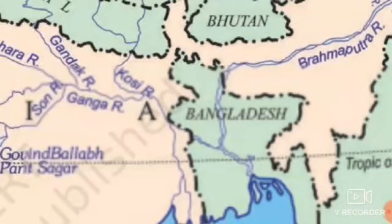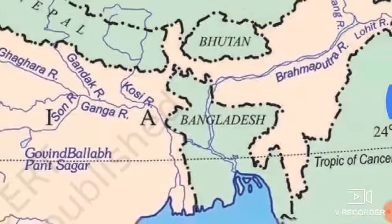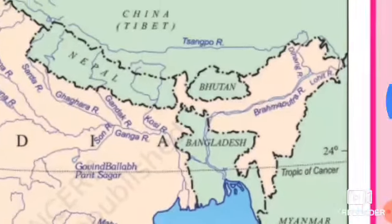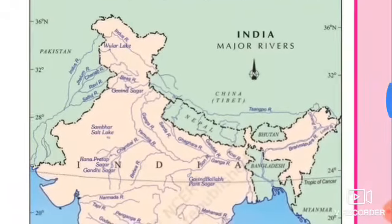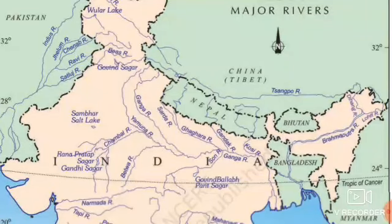Then in the Bay of Bengal, the river meets the sea. This is the main map of Indian rivers. You can see that in the Ganga river system there are many other tributaries, such as Yamuna, Sona, Ghagra, Gandak, and Kosi.